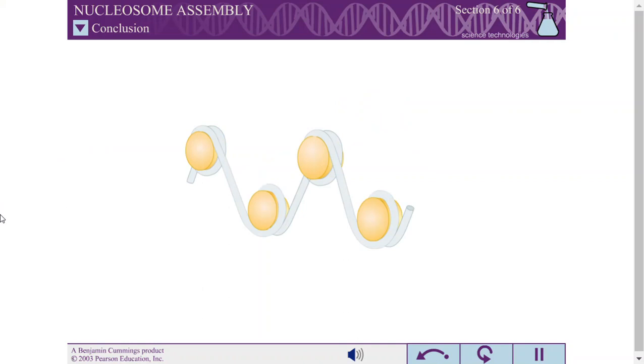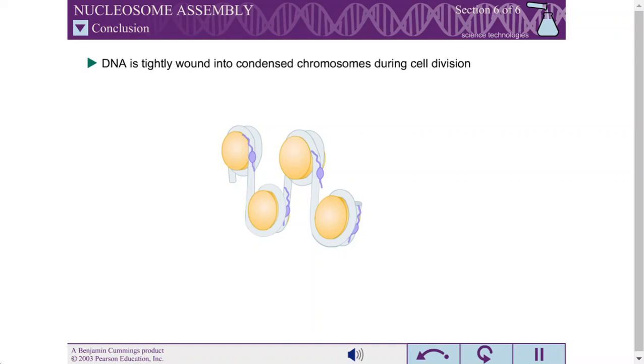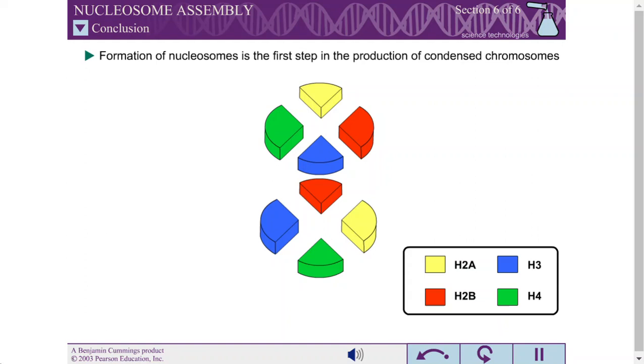DNA is tightly wound into condensed chromosomes to ensure each daughter cell receives the proper complement of genomic DNA. The formation of nucleosomes is the first step in the formation of these chromosomes.